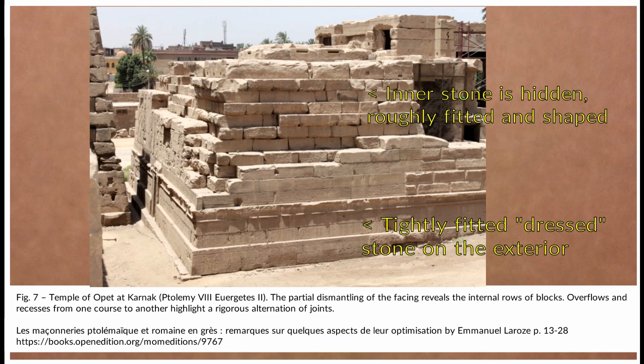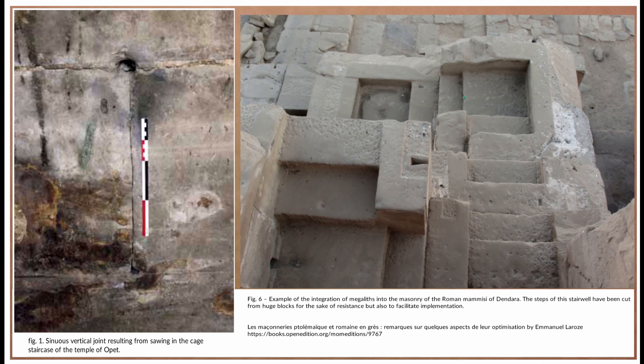Temple of Opet at Karnak — again a common building style. The inner stones you're not going to see are roughly shaped because they're hidden and don't need to be visible. That's the same on the pyramid and again in South America — those fantastic walls, but behind them the quality is very low or just the most basic technique. It's only the outside surface that's tightly fitted — only what's seen by the eye, and even that's just the outer portion.